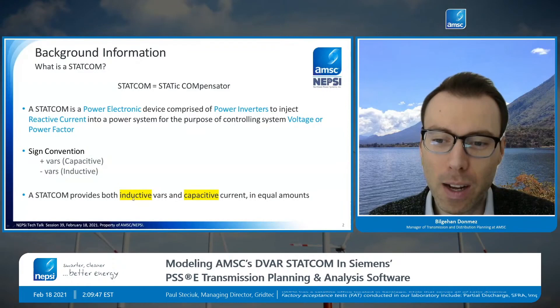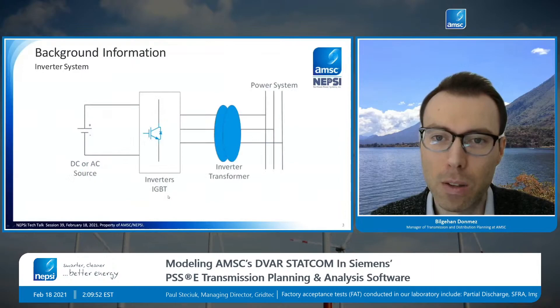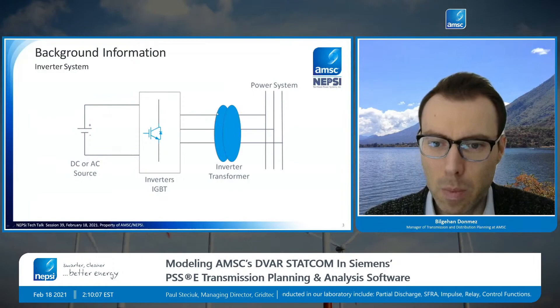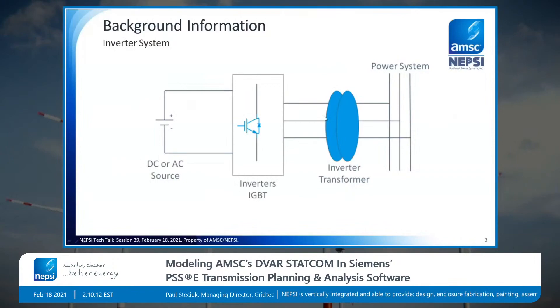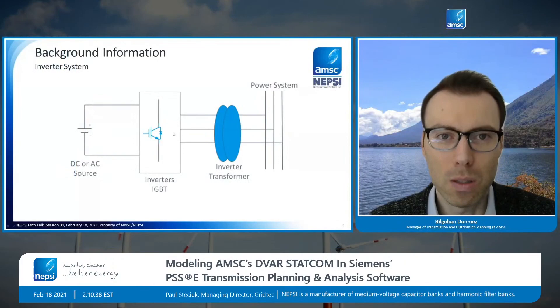The STATCOM provides both inductive and capacitive current. The inverter system connects to the system with a step-up transformer. The terminals of the STATCOM are at 480 volts, and then we step it up to medium voltage, typically anywhere from 12 kV to 35 kV. From there, there could be another transformation up to the transmission system. On the low side of the step-up transformer, we have IGBTs and a DC capacitor as a DC source, which is rectified to generate an AC waveform using these inverters.